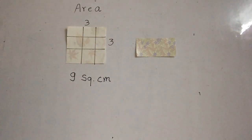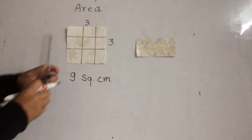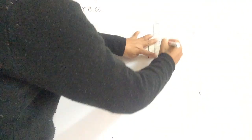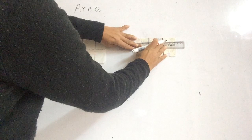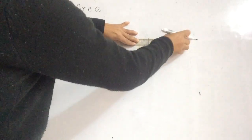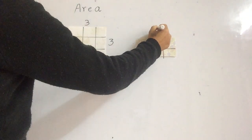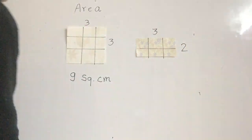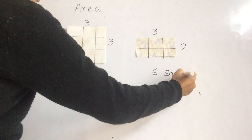In the same way we can find the area of this rectangular shape. We draw square boxes here. Along the length we have one, two, three boxes, and along the breadth we have one, two boxes. So counting: one, two, three, four, five, six — six square centimeters.